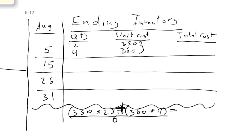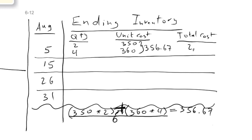After doing the math, you get $356.67 as your average cost per unit. The total cost in the numerator is $2,140, which is also your total cost for those six units before any sales.